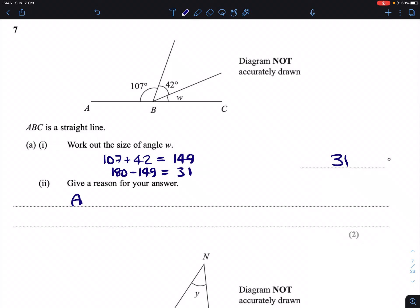Give a reason for your answer. I kind of said it already, but any time you have a straight line, angles on a straight line add up to 180 degrees.